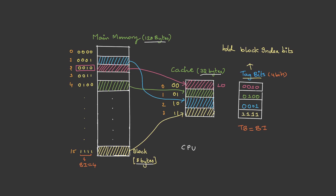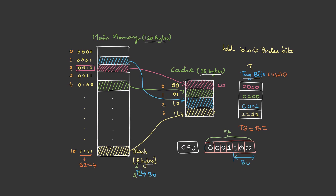Let's assume the CPU makes a request. This is the physical address. Because we know the block size is 8 bytes, that is 2³, we need 3 bits for block offset. So the least significant 3 bits are the block offset and the rest of the bits are the tag bits.